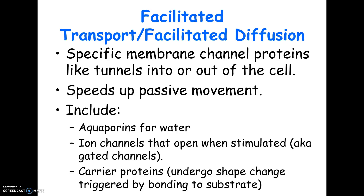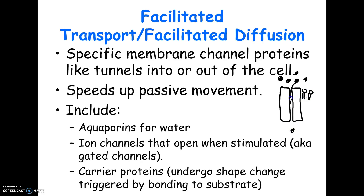Facilitated diffusion includes aquaporins that carry water through, ion channels, and carrier proteins that change shape. The bottom line is: if you see substances going from higher to lower concentrations through a protein in the membrane, that's facilitated diffusion — and it's passive. If you see things going from higher to lower straight through the phospholipids instead of through a protein, that's simple diffusion.